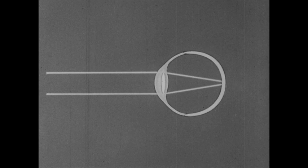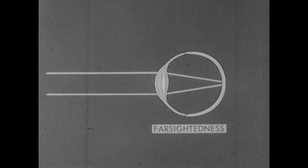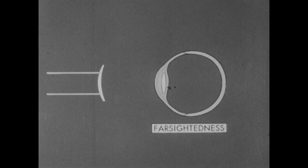If the lens is thinner than normal at the center, light rays will strike the retina before they have converged to a point. This condition, called farsightedness, can be corrected with eyeglasses having convex lenses.